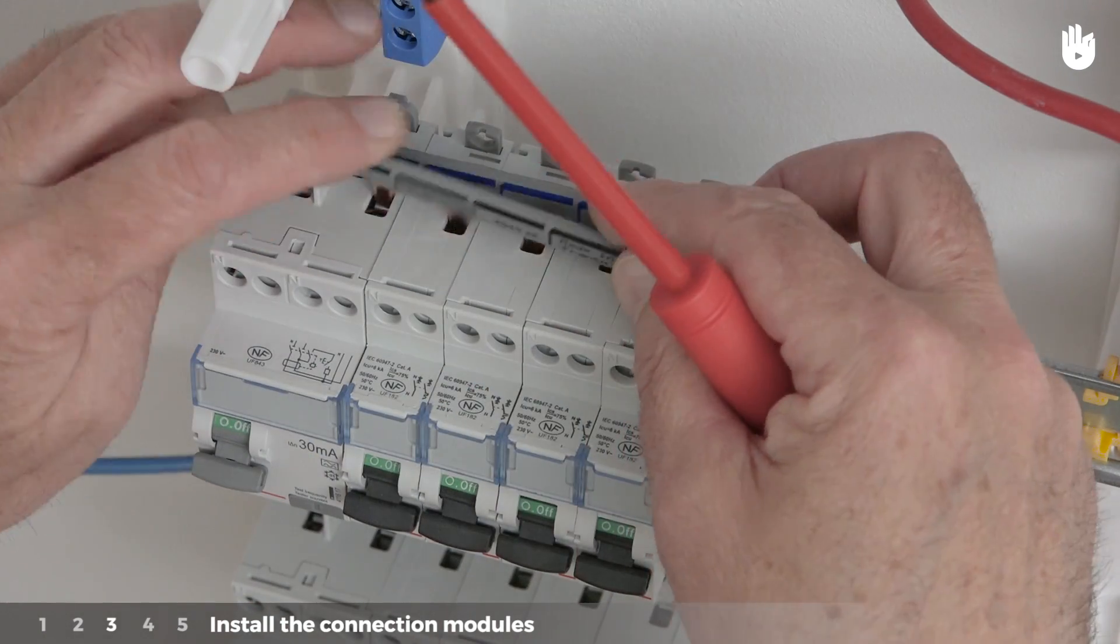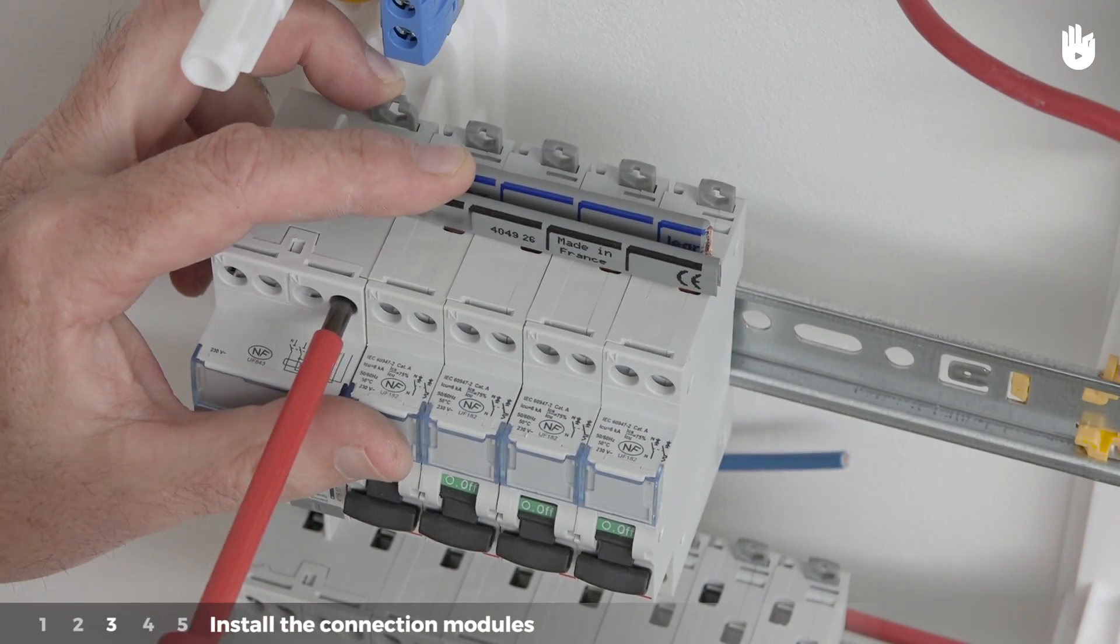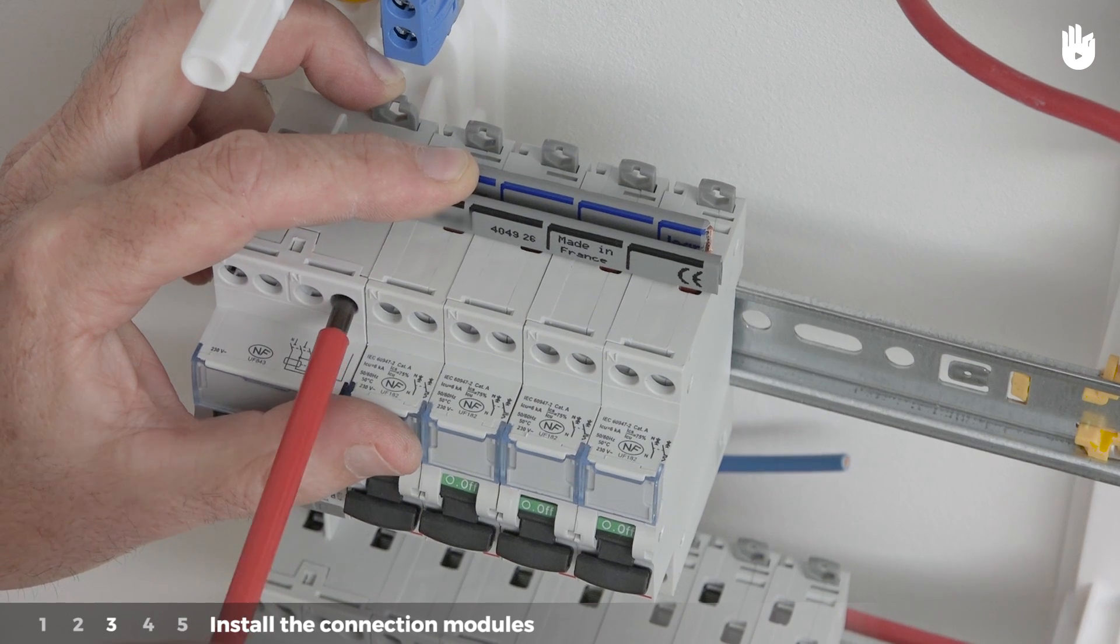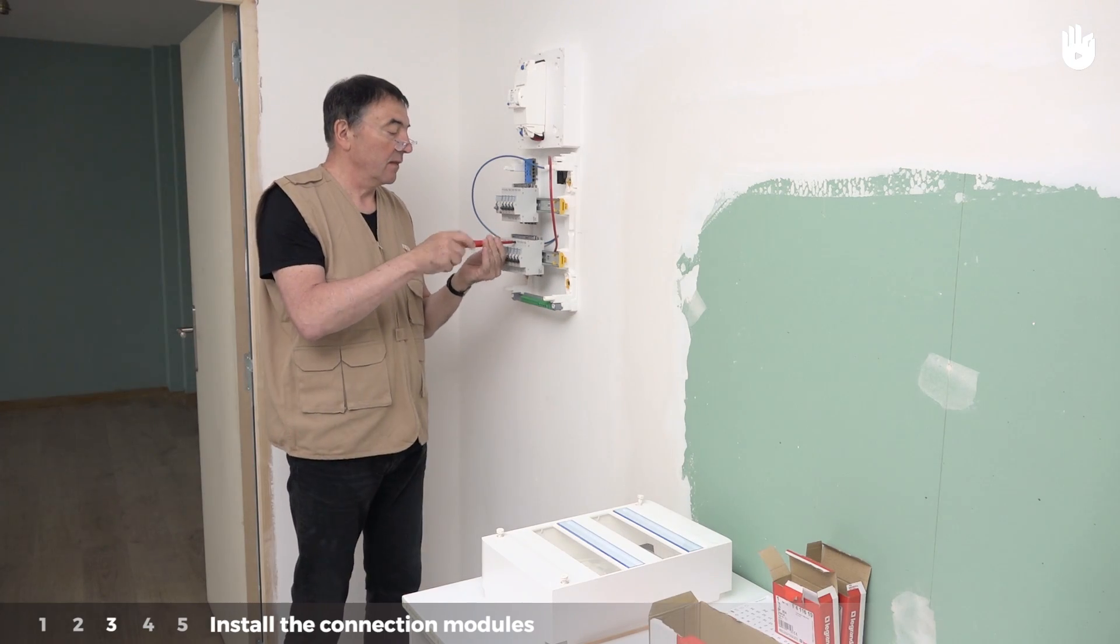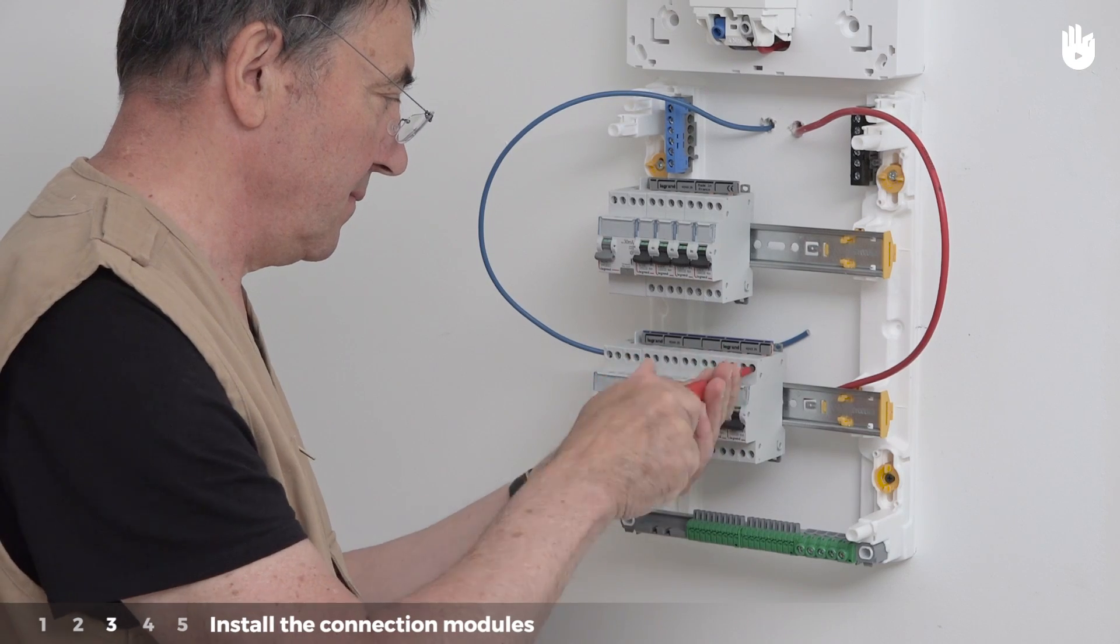Position the second connecting strip on the phase terminals, high on the right side of each individual circuit breaker. Tighten the screws for the terminals. Repeat these steps for the second row of circuit breakers.